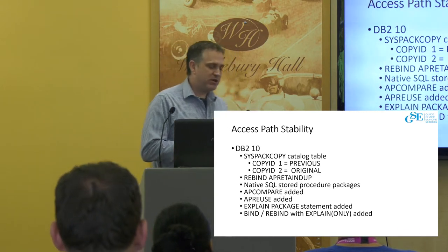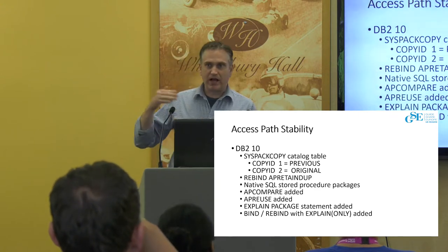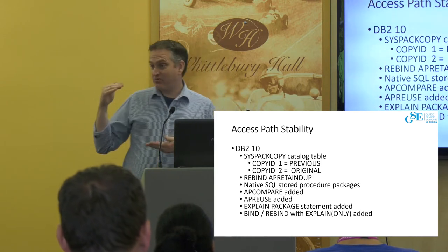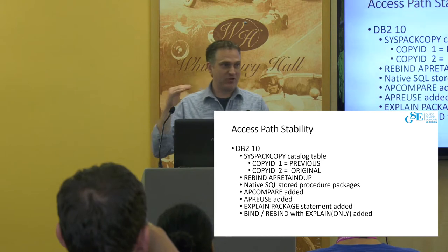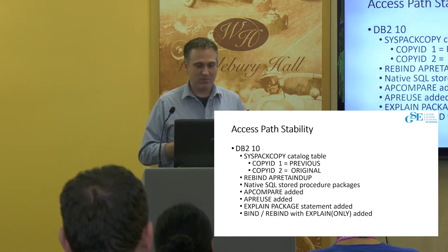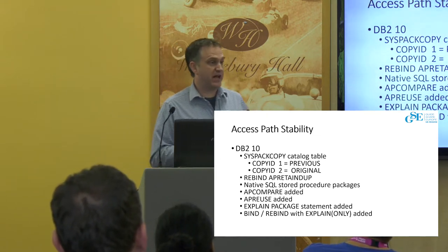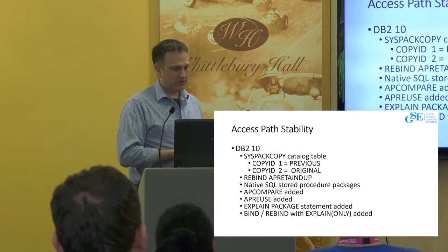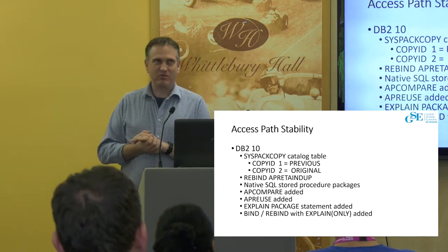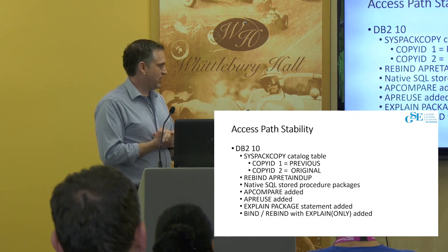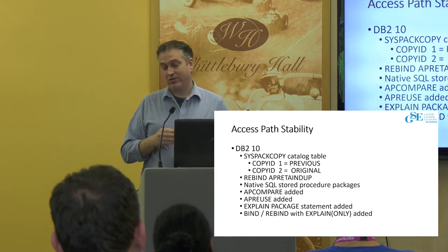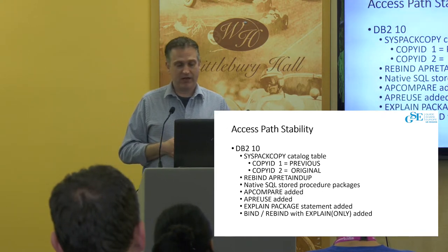They also gave us the explain package statement, which allows you to take the contents of a package and ask what are the access paths in there. So if you forgot to bind with explain yes, or you bound with explain yes three years ago and threw away the plan table in the interim, you can go back and ask DB2 to give you the explain data out of that package. You can also do bind or rebind with explain only, which says don't produce the package — just show me the explain out of the statements in that package.